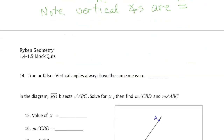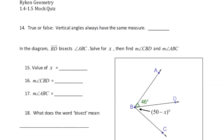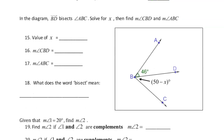True or false: vertical angles always have the same measure. That is definitely true, because I just stated that. Then in the diagram, BD bisects ABC — solve for X.